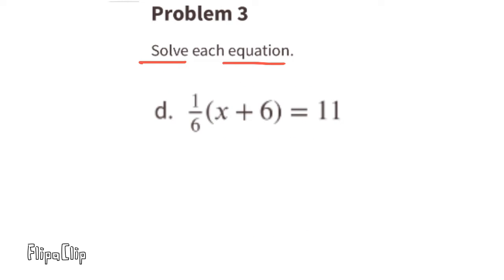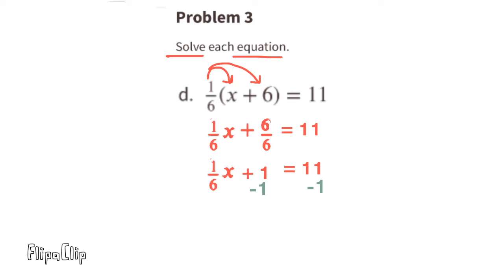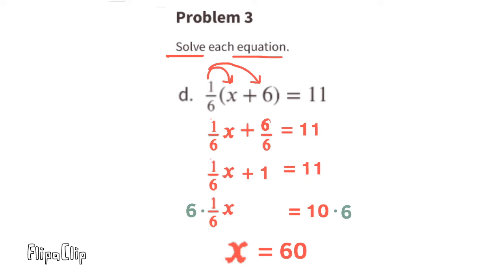Part d: one-sixth times (x plus 6) equals 11. Distributing gives us one-sixth x plus one. Since 6 over 6 equals 1, we have one-sixth x plus 1 equals 11. Subtract 1 from both sides, leaving one-sixth x equals 10. Multiply both sides by 6. Since 6 times one-sixth is 1, we get x equals 60.